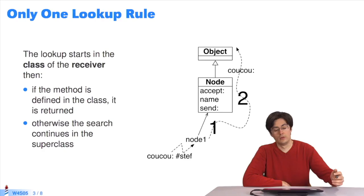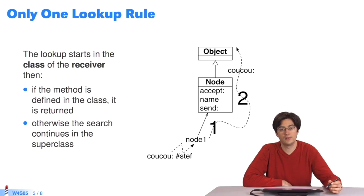Whenever the receiver is a class or other object, there is only one way to lookup a method. This is the lookup algorithm we've seen several times in earlier sessions.